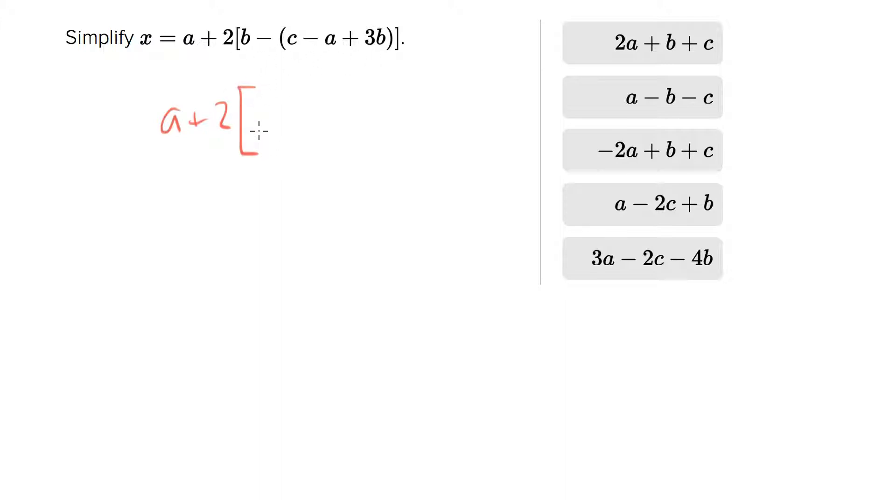What I want to do is distribute this negative so I don't get confused. So b minus c plus a minus 3b, and b minus 3b will give you negative 2b. So let's say a plus 2 times negative 2b minus c plus a.